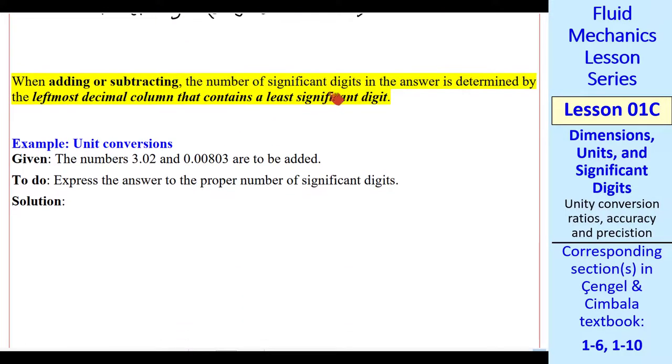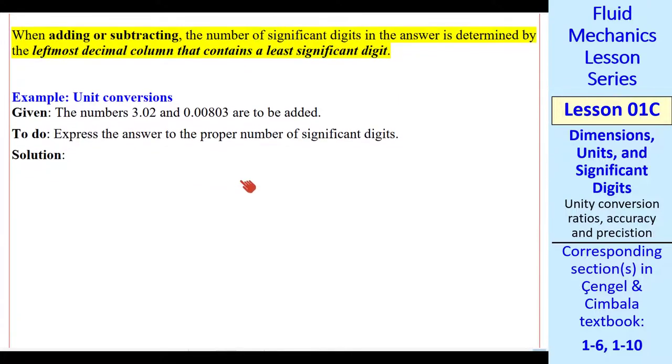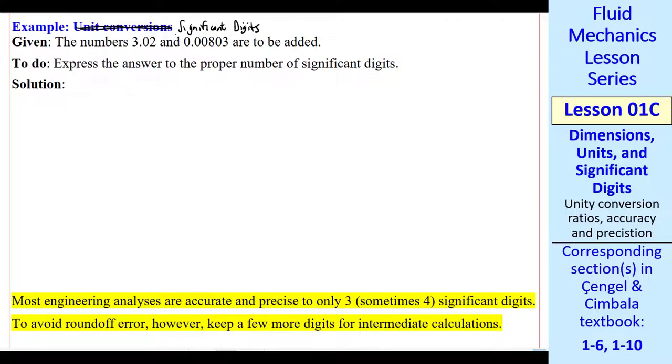When adding or subtracting, the number of significant digits in the answer is determined by the leftmost decimal column that contains a least significant digit. This is best illustrated by example, and I found another typo. This should be significant digits.